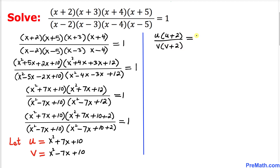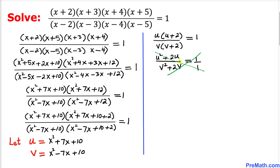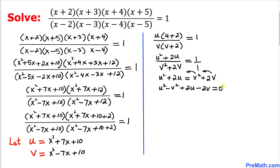Our equation now becomes u(u+2) divided by v(v+2) equals 1. Distributing gives (u²+2u) divided by (v²+2v) equals 1. Writing 1 as a fraction and cross-multiplying, we get u²+2u = v²+2v. Moving all terms to the left gives u²-v²+2u-2v = 0.